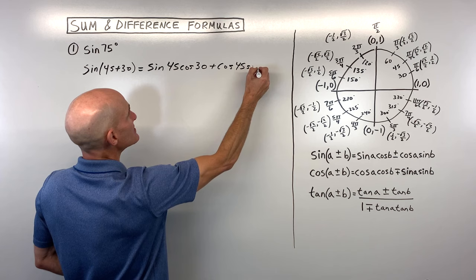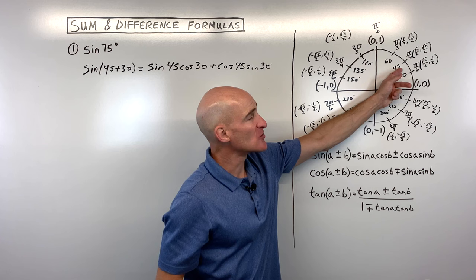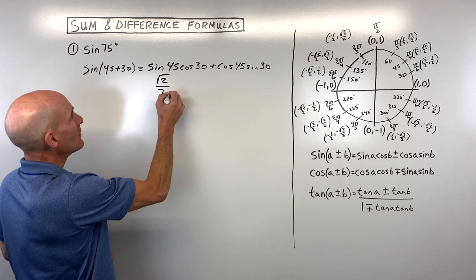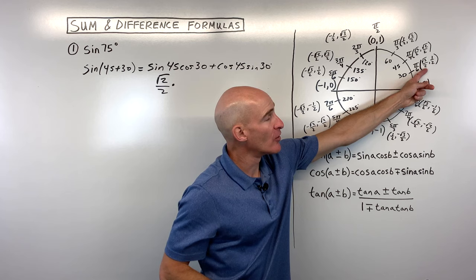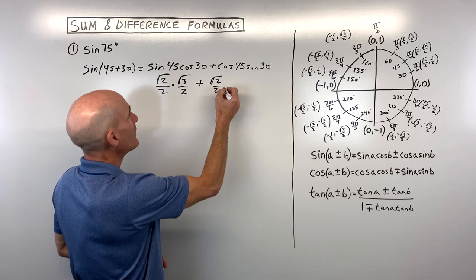Now that we've expanded, let's go to our unit circle. The sine of 45 degrees — remember, sine is the y-coordinate — that's going to be √2/2. The cosine of 30 degrees — cosine is the x-coordinate — that's √3/2. The cosine of 45 is our x-coordinate, which is √2/2. And the sine of 30 is our y-coordinate at 30 degrees, which is 1/2.